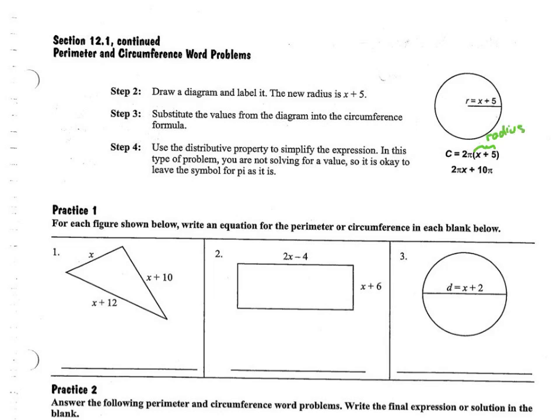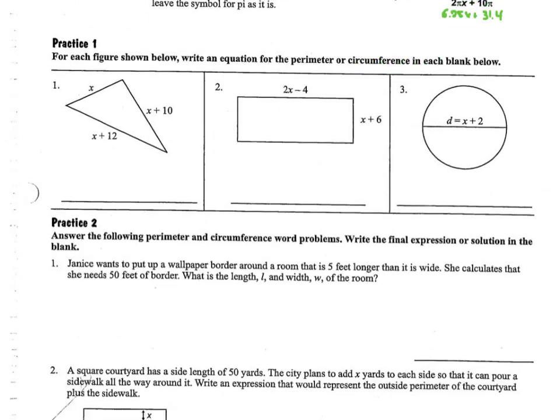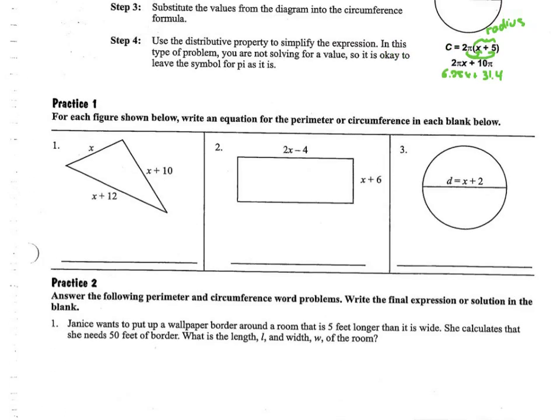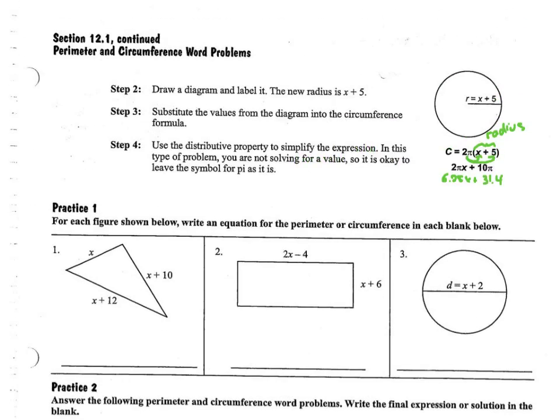And so simplifying, what they did is they brought in their 2 pi and they brought in distributing. If you would rather, 2 times pi is just 6.28 approximately, and 10 times pi would be approximately 31.4. If you did this, that would have just been fine as well. So this page here actually has a few practice problems which will probably be assigned in class. But that is it for perimeter.